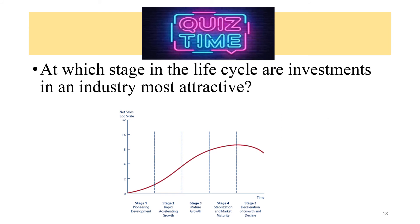Let's have a quick quiz: at which stage in the lifecycle are investments in an industry most attractive? Obviously, everyone is looking for an industry in the early phases of Stage 2 and hopes to avoid industries in Stage 4 or Stage 5. Conventional wisdom is that investors should seek firms in high-growth industries. However, this is over-simplistic. If security prices already reflect the likelihood of high growth, then it is too late to make money from that knowledge. Moreover, high growth and fat profits encourage competition from other producers. Therefore, investors have to be aware of the company's valuation too.